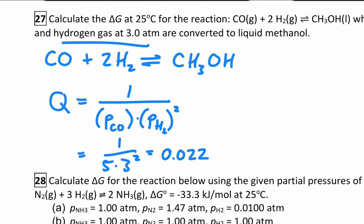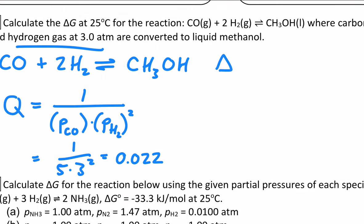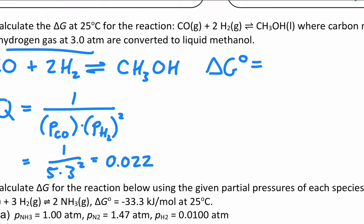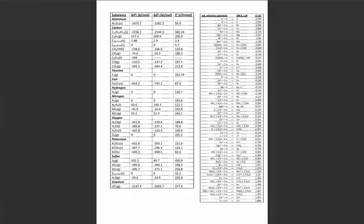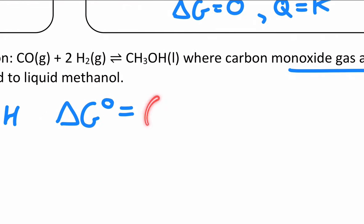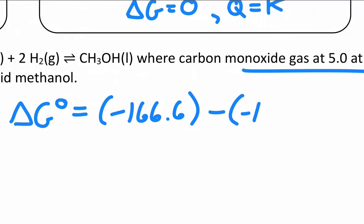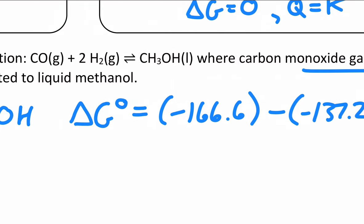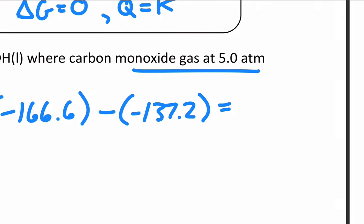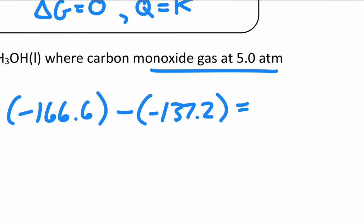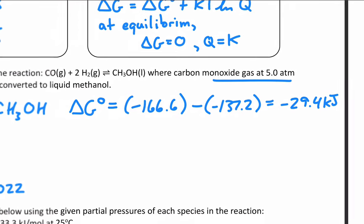So then to get our delta G, we actually first need the standard delta G value because that's in the equation. Go back to that chart at the end of your workbook, find the values that you need. I'll go ahead and plug them in. It's negative 166.6 kilojoule per mole for the methanol minus negative 137.2 kilojoules for the carbon monoxide. You don't even have to look up the value for hydrogen because remember elements in their standard state have a zero value. This turns out to be negative 29.4 kilojoules. That's our standard.